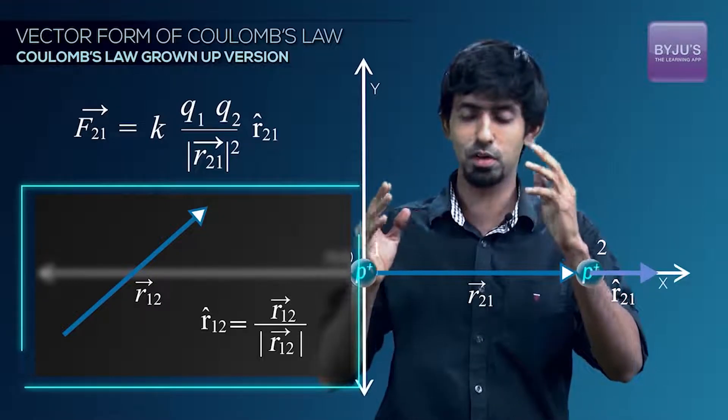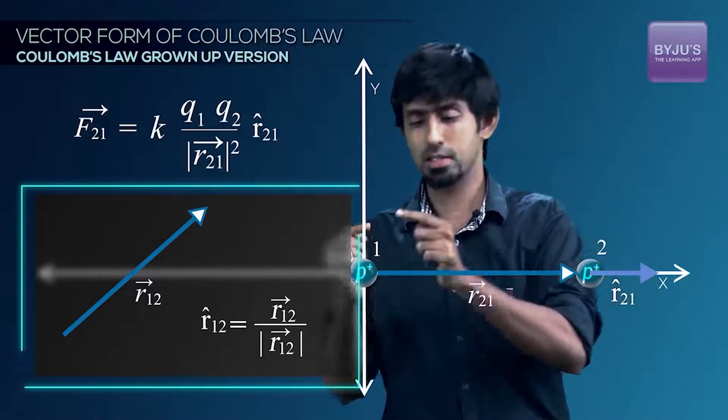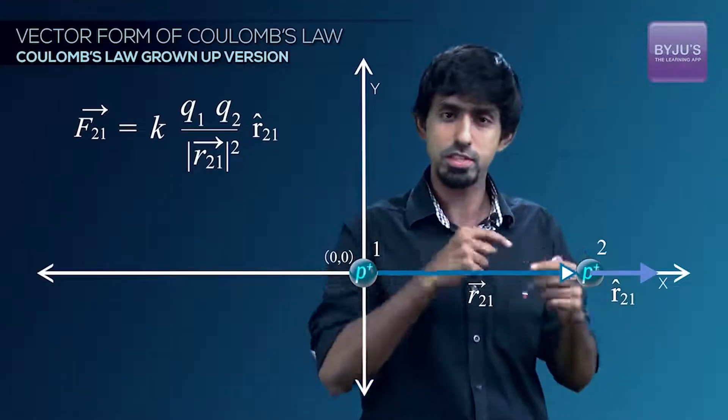So that vector scaled down by its magnitude will give you the unit vector in that direction. Of course, I'm saying scale down by imagining the vector to have a larger magnitude than 1. If it's lesser, let's scale it up. But you know what I mean. So therefore, in general, what is it?